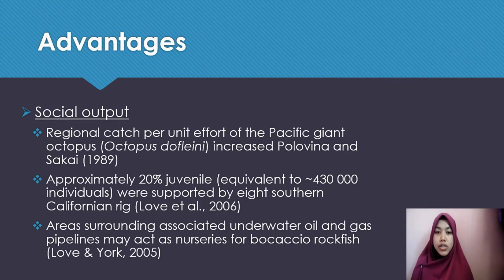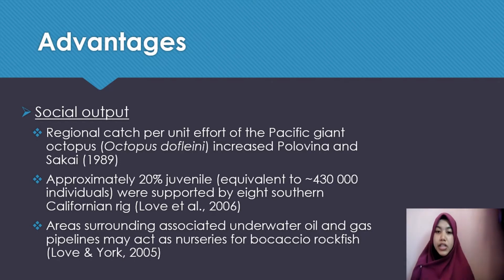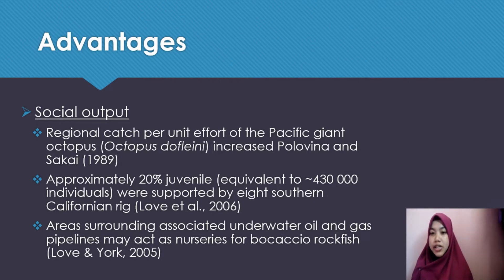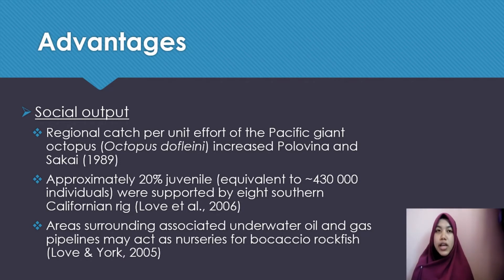For social output, the regional catch-per-unit effort of the Pacific giant octopus, Octopus dofleini, increased in Polyvina and Sakai, proving that rigs-to-reef projects encourage other species to inhabit the area. Not only that, approximately 20% of juveniles also increased in Southern California rigs. The area surrounding associated underwater oil and gas pipelines near the rigs can also act as a specialist habitat, such as for vocational rockfish.